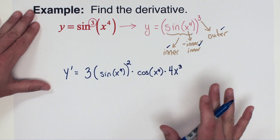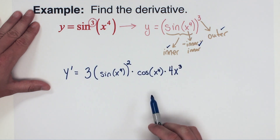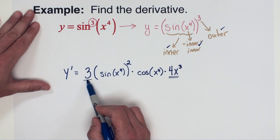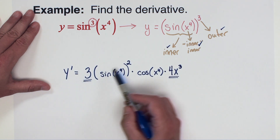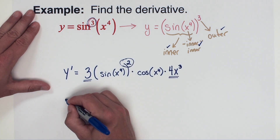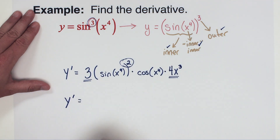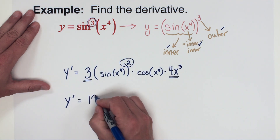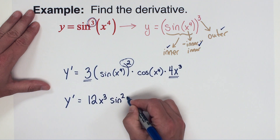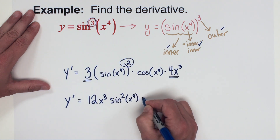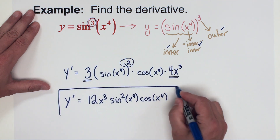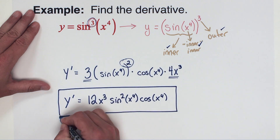There's our derivative. Now I'll clean it up by moving numerical and polynomial factors to the front, and rewriting the power so it looks like the original. All in one step: y prime equals 12x cubed times sine squared of x to the fourth times cosine of x to the fourth. I consider that simplified and finished.